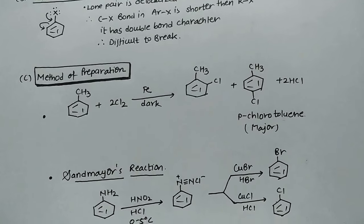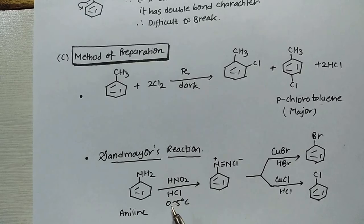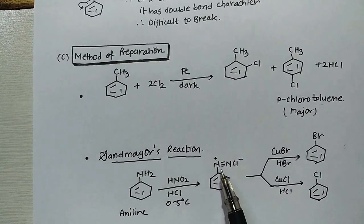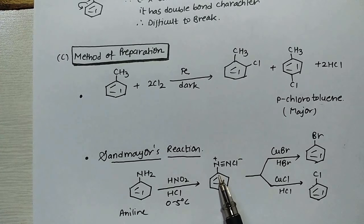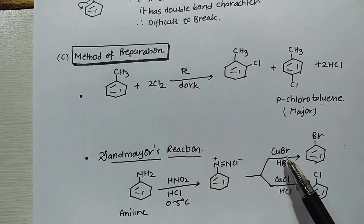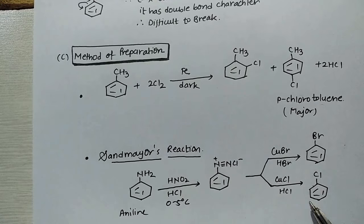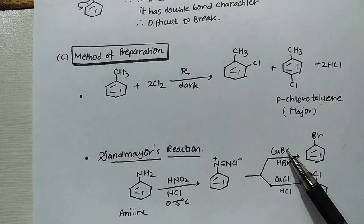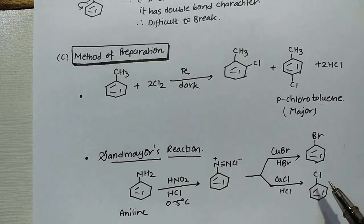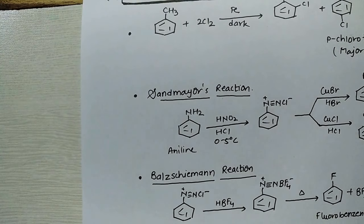Coming to Sandmeyer's reaction, we can see aniline is the starting material. Diazotization means 0 to 5 degree Celsius ice cold condition with NaNO2 and HCl to form benzene diazonium chloride. If you treat with cuprous bromide, point to be noted it is cuprous bromide, then you will get bromobenzene. Cuprous chloride will give chlorobenzene. And this same reaction with copper powder we can say is Gatterman reaction, although Gatterman reaction yield is poor as compared to Sandmeyer's. Sandmeyer's is better.